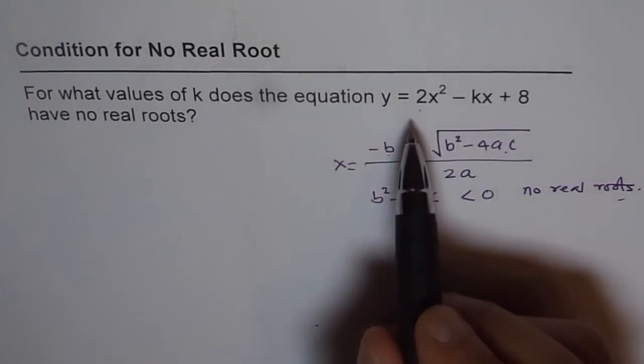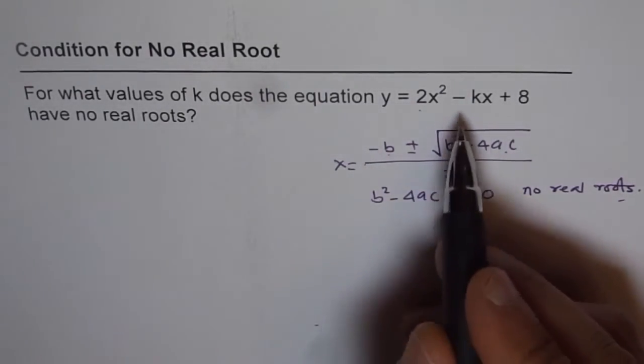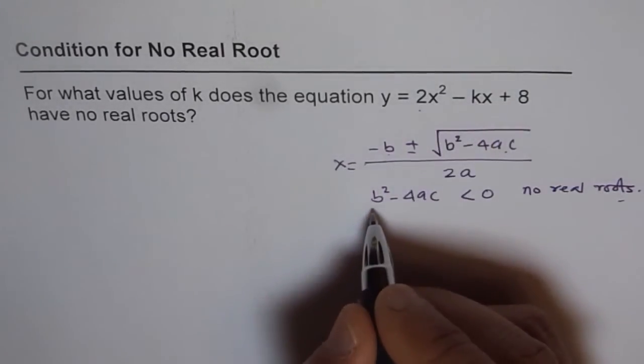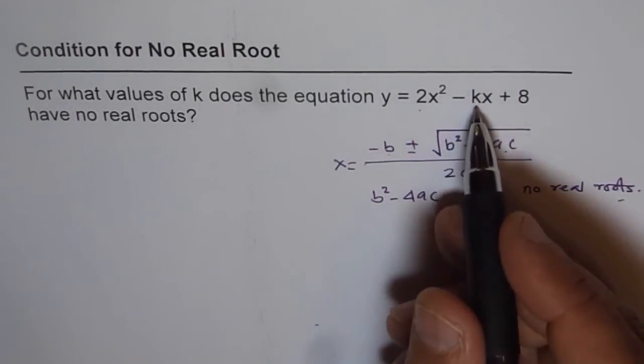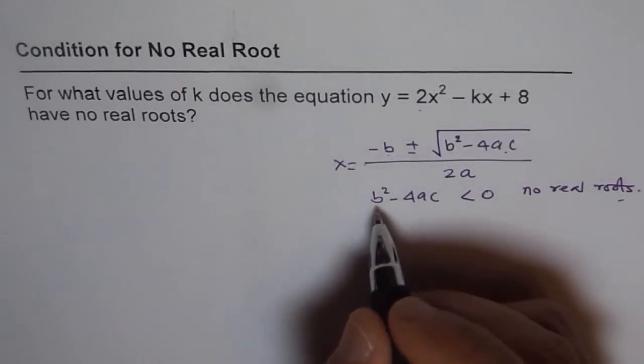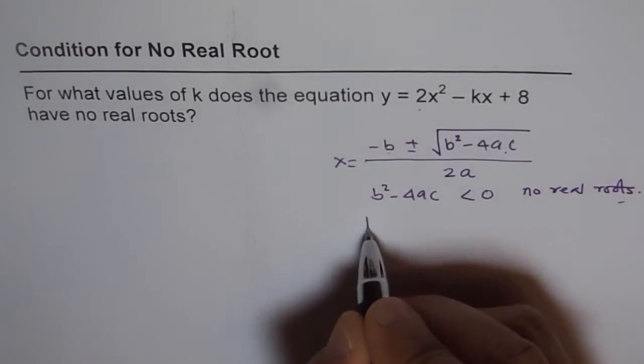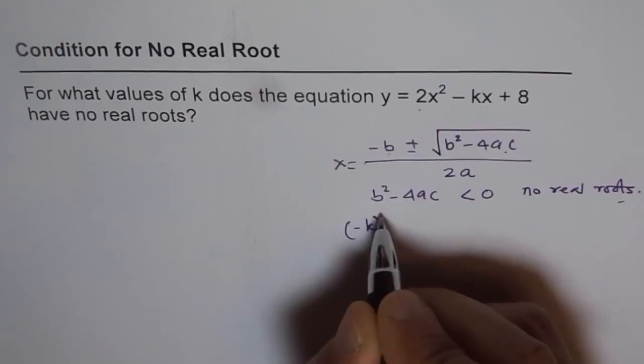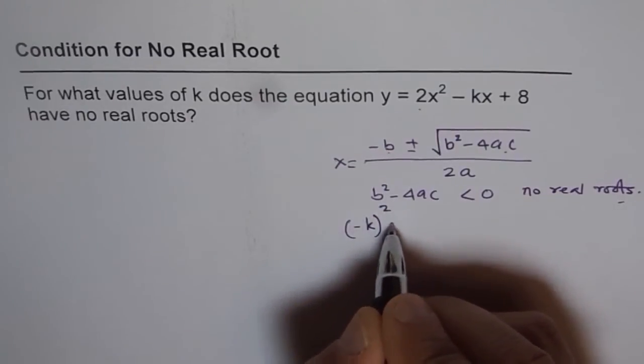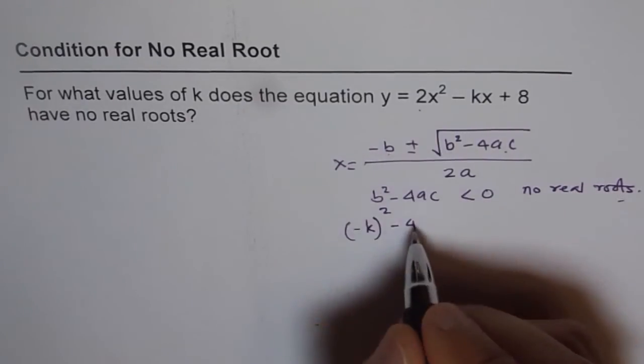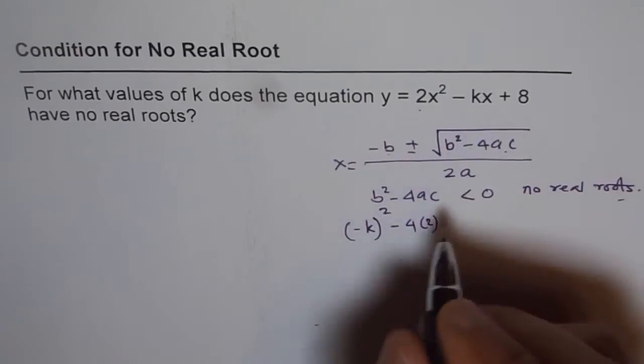Now, b² - 4ac means b is -k for us. When you square it, it is just k². So we will write (-k)² minus 4 times a is 2, and c is 8.